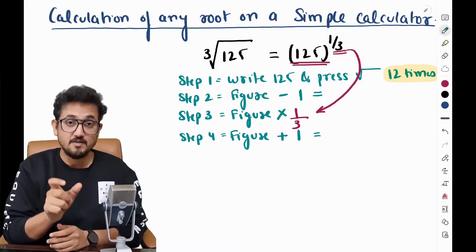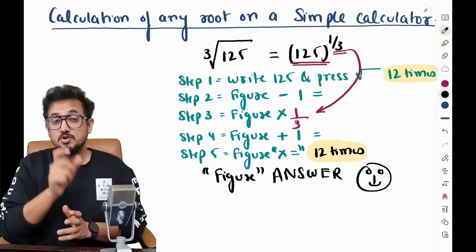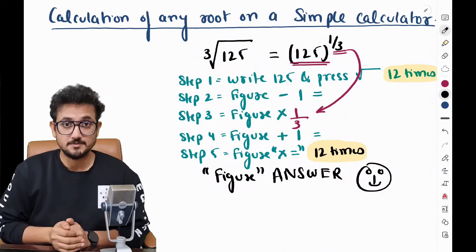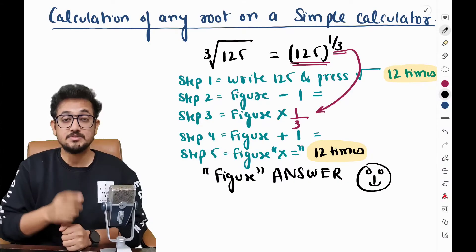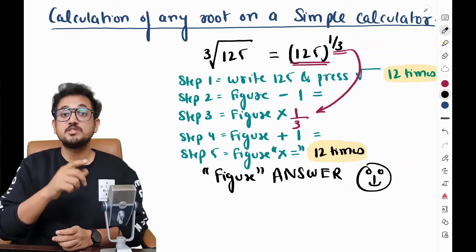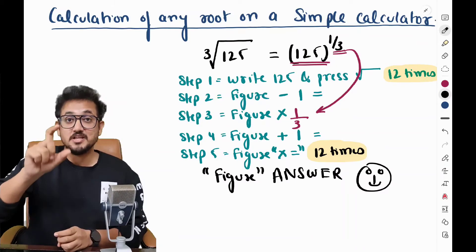whatever number figure will come, you have to follow a process. The process is you have to press into is equal to 12 times. So into is equal to 12 times, one, two, three, four. So when you press the into is equal to 12th time, the figure that you will get is the answer.